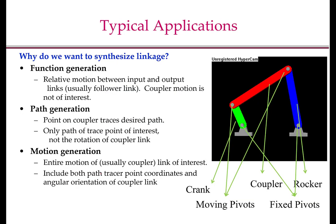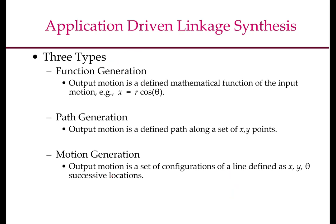The next fundamental question that arises is: why do we want to synthesize a linkage? There are three typical classes of application for linkages: function generation, path generation, and motion generation. In function generation, the relative motion between input and output links is of importance; the output link is usually the follower link, and the coupler motion is usually not of interest. In path generation, it is of interest that a point on the coupler traces a desired path; only the path of the trace point is of interest, not the rotation of the coupler link. In motion generation, the entire motion of the coupler is of interest — it includes both the path trace point coordinates and the angular orientation of the coupler link. More precisely, in function generation, the output motion is defined as a mathematical function of the input motion.